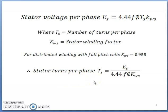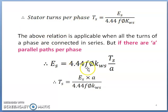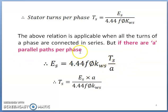In case of a synchronous machine, depending upon the number of parallel paths per phase, the equation gets modified as: Es = 4.44 * f * phi * Kws * Ts divided by A, where A is the number of parallel paths per phase.